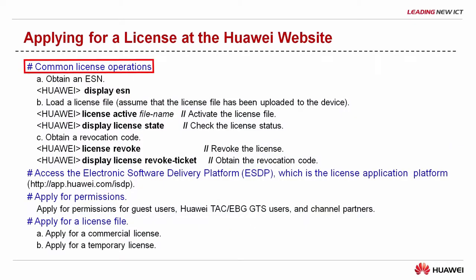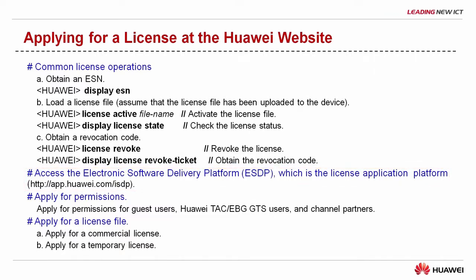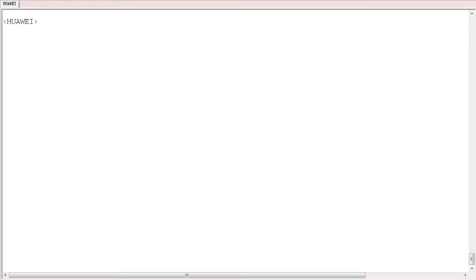Now I will demonstrate how to perform common license operations on a device, including how to obtain a device ESN, load a license file, and obtain a revocation code. After that, I will show you how to apply for ESTP permissions and a license file. Now let's take a look at the common operations on a device.